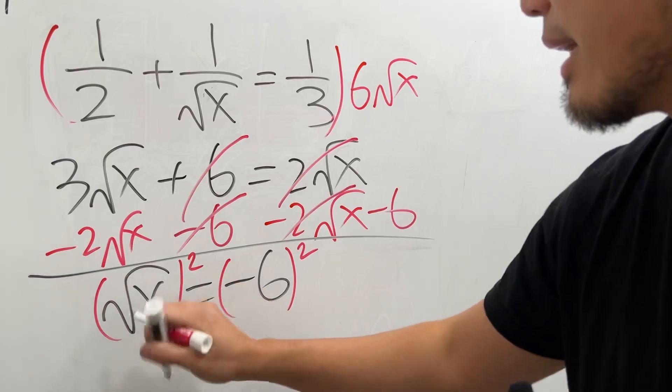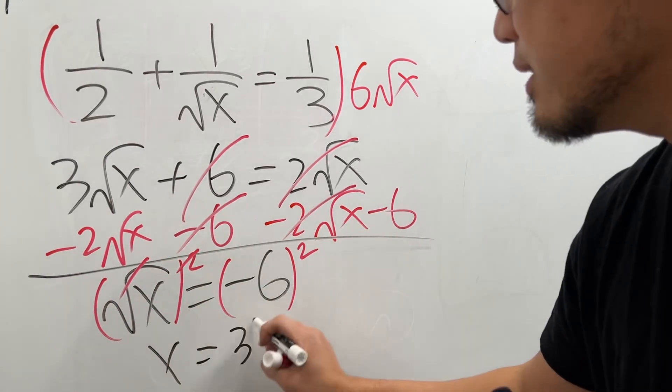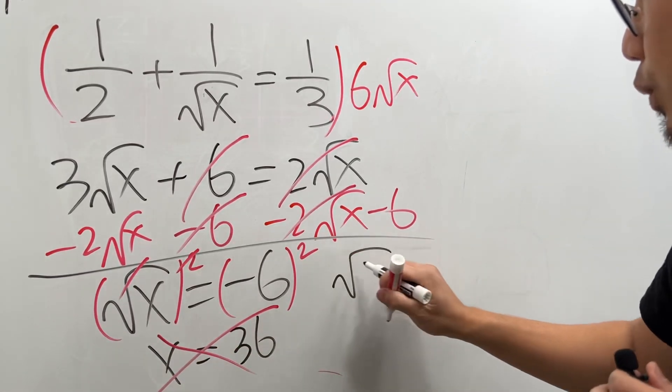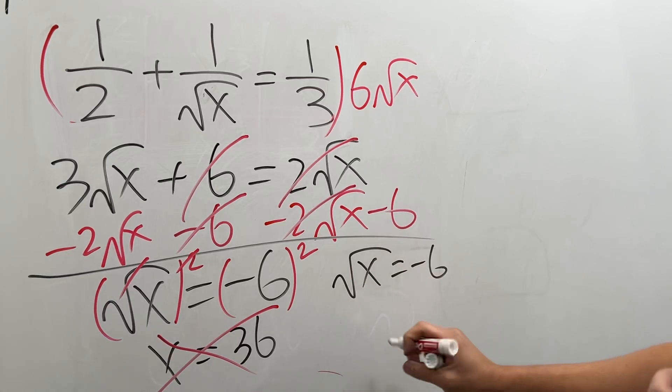If you think that we can just square both sides right here and then I can cancel this and that and you say x is equal to negative six squared, which is 36, in fact this is incorrect because when we have a square root of x equal to negative six right here, the output of square root of x cannot be equal to negative number.